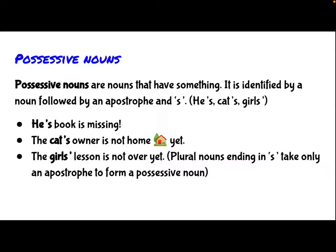The last type of noun is possessive nouns. A rather simple one. Possessive nouns are nouns that have something. It is identified by a noun followed by an apostrophe and S. The bolded words are the possessive nouns as shown in the examples here. Do take note that plural nouns ending in S take only an apostrophe to form a possessive noun, as shown in the last example here.